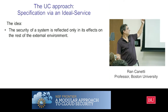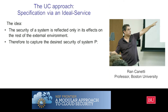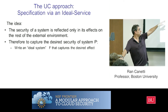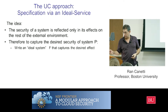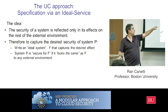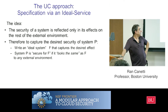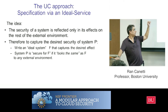So if you want to capture the desired security of the system, let's call it P. What we're going to do is write an ideal system, which we call F — functionality — that captures the desired effect of what we're going to do on the external system. And then we're going to say that the system P is secure for F if it looks the same as F to any external environment. That's kind of the high level. All the security properties that we want are encoded and put into this F.